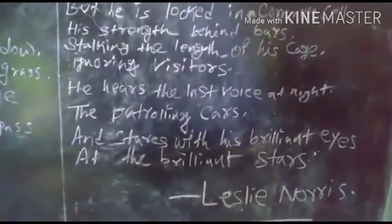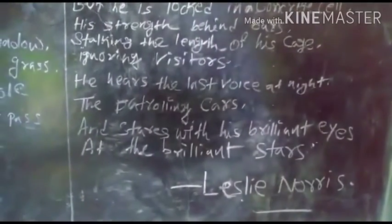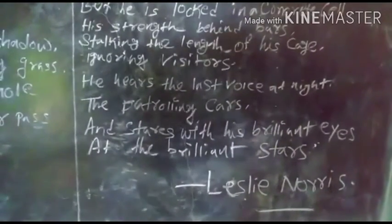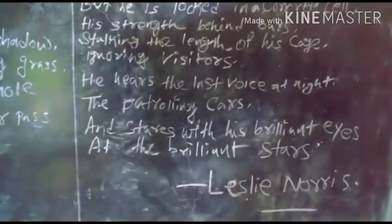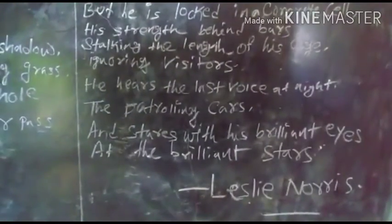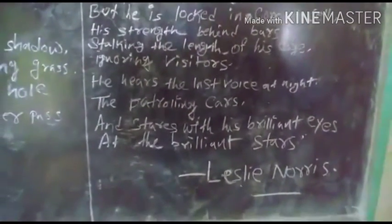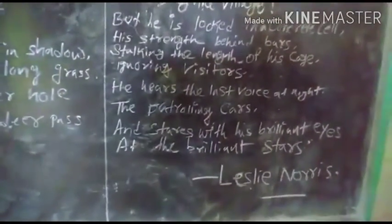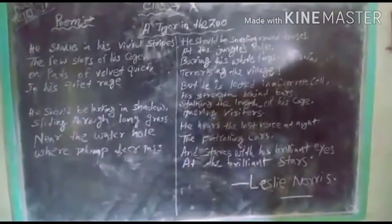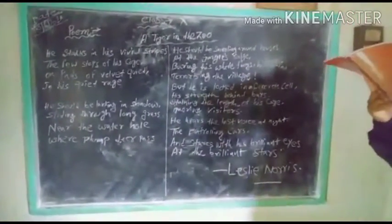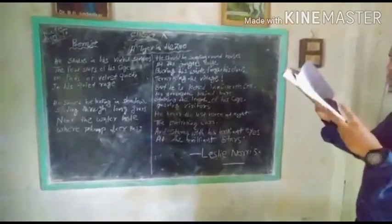Go to the fifth stanza. In the fifth stanza of this poem: 'He hears the last voice at night, the patrolling cars, and stares with his brilliant eyes at the brilliant stars.' In Hindi: Wo raat ko gasht lagaati gaadi ki antim awaaz sunta hai aur apni chamkili aankhon dwara chamakti taaron ko ghoor kar dekhta hai. If we explain the fifth stanza into English: The tiger remains disturbed by patrolling cars even at night. He has lost all hopes of getting into his natural habitat. He stares at the brilliant stars, seemingly praying to the Almighty for freedom, searching for some hope and rest. His eyes are brilliant, which implies that he hopes for freedom someday.